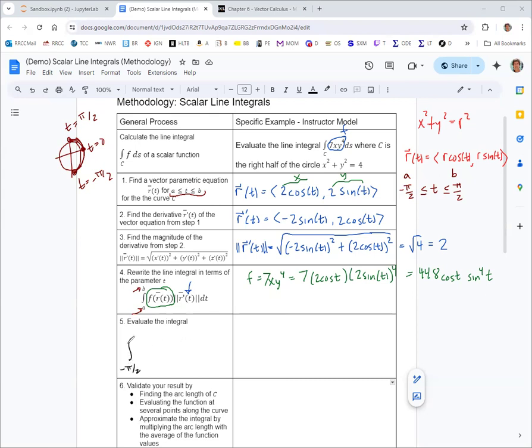So it'd be the integral from negative pi over 2 to pi over 2. Then put in the function f, which we found to be 448 cosine t sine to the 4t. And then put in the magnitude of r prime, which is an extra factor of 2. Oh, I see the 448 includes the 2. Sorry about that. So 2 to the 4th is 16 times 2 is 32 times 7 is 224. When we multiply with the 2 there, it'll be 448.